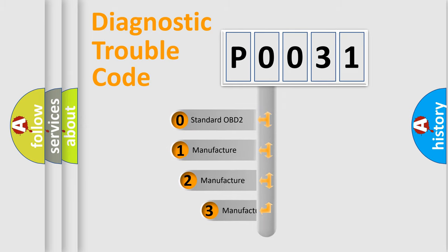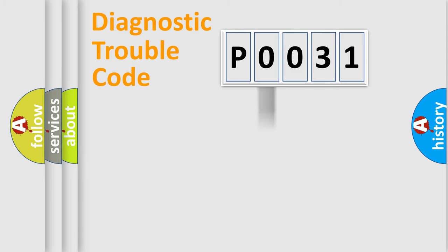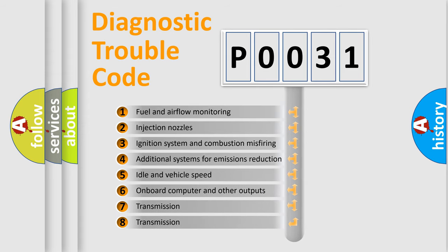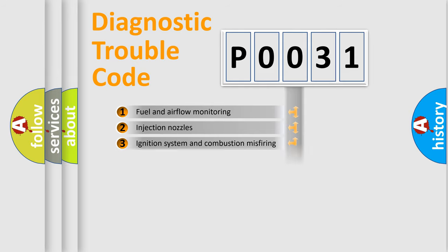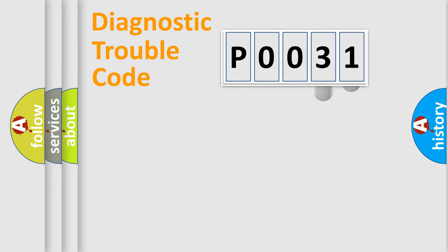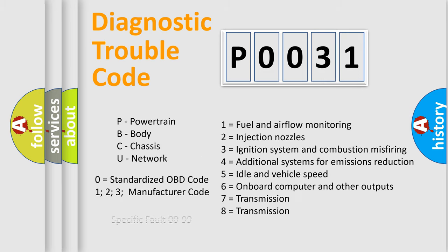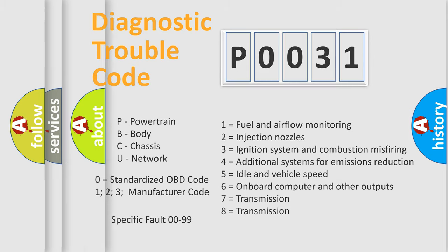If the second character is expressed as zero, it is a standardized error. In the case of numbers 1, 2, or 3, it is a more specific expression of a car-specific error. The third character specifies a subset of errors. This distribution is valid only for the standardized DTC code, and only the last two characters define the specific fault of the group. Such a division is valid only if the second character code is expressed by the number zero.